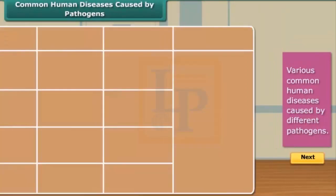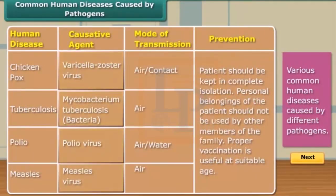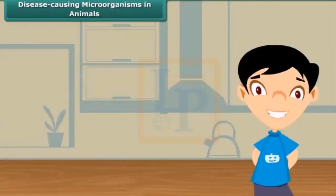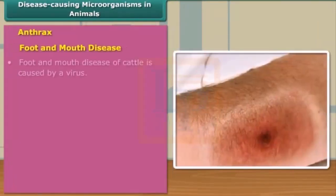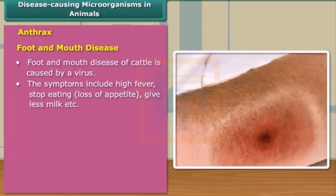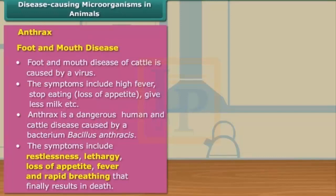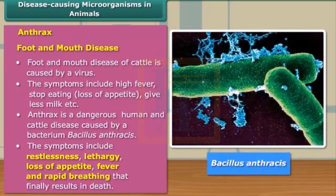Here is a list describing various common human diseases caused by different pathogens. Now let's move on to diseases in animals. Anthrax and foot and mouth disease are common examples of animal diseases. Anthrax is a bacterial disease caused by Bacillus anthracis, while foot and mouth disease in cattle is caused by a virus.